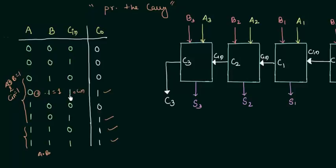So whenever it is 1 like in this case the Cout is 1 and also in this case. So what I can write, I can write Cout as A and B or this thing A XOR B and Cin.